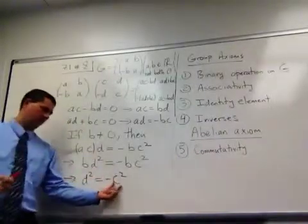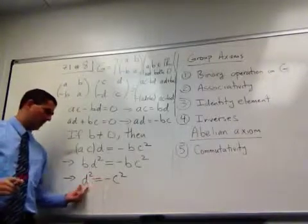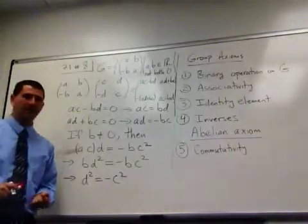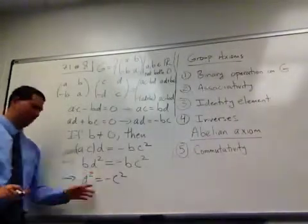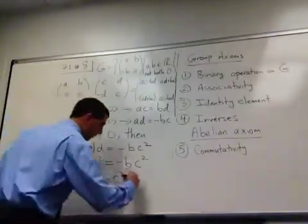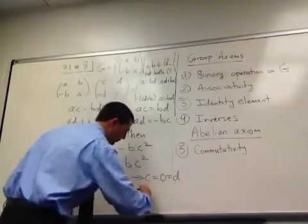So D squared is equal to negative C squared. But C squared and D squared, those are both positive numbers. And one positive number is equal to the negative of another positive number. Nope, that's not going to happen. The only way this could possibly happen is if these were actually zero. So that would mean that C and D were both zero. And that's a contradiction.